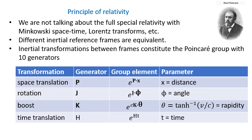The Poincaré group has four types of transformations: space translations, rotations, boosts, and time translations. Each transformation has its own generator, and group elements can be expressed as exponential functions of the generators. Note that in relativistic physics, the boost parameter is not a velocity but the so-called rapidity, which is related to velocity by the inverse hyperbolic tangent.